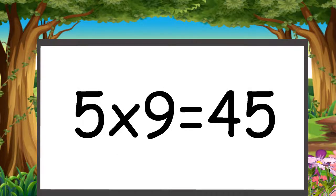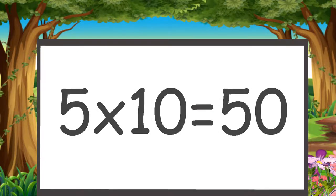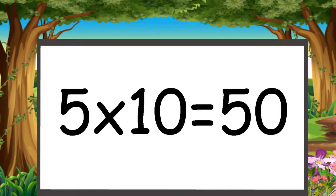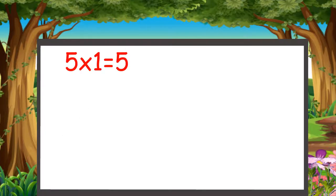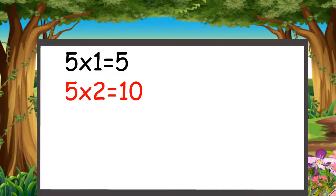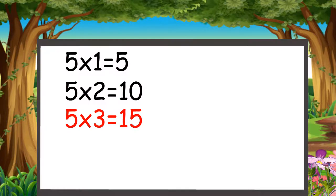Five nines are forty-five, five tens are fifty. Five ones are five, five twos are ten, five threes are fifteen.